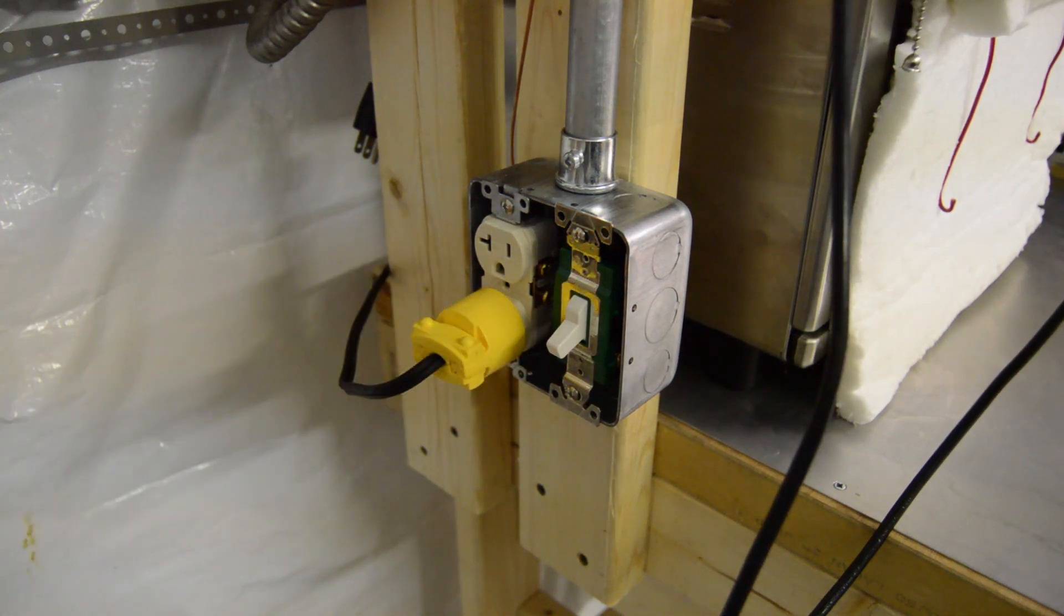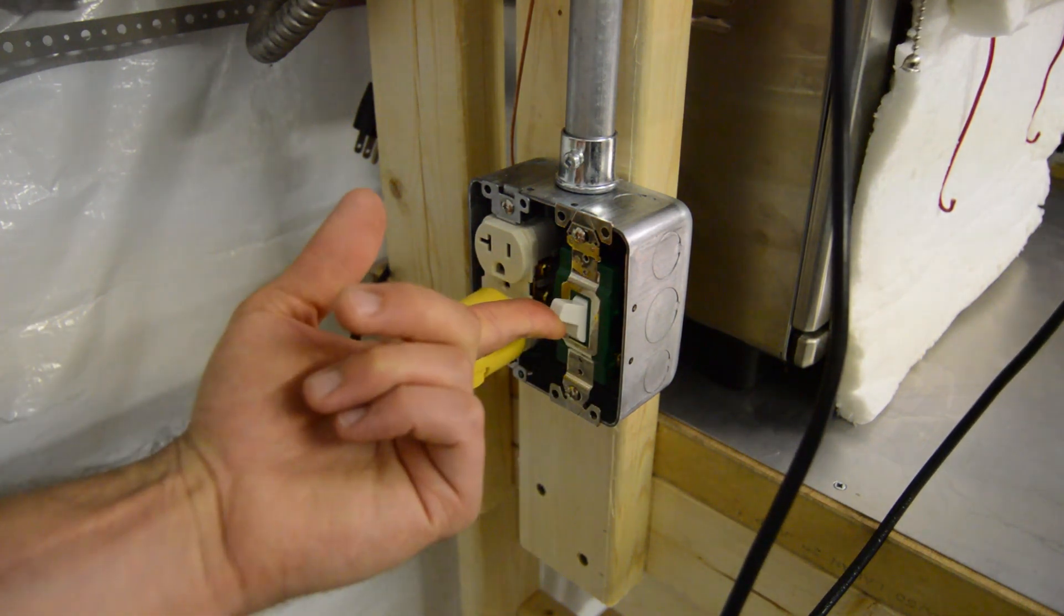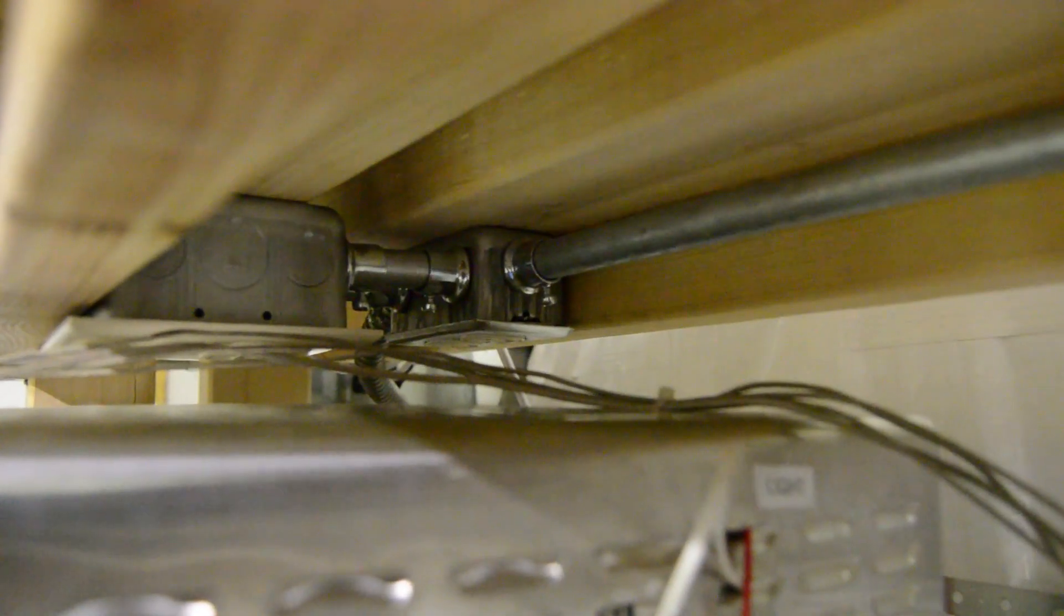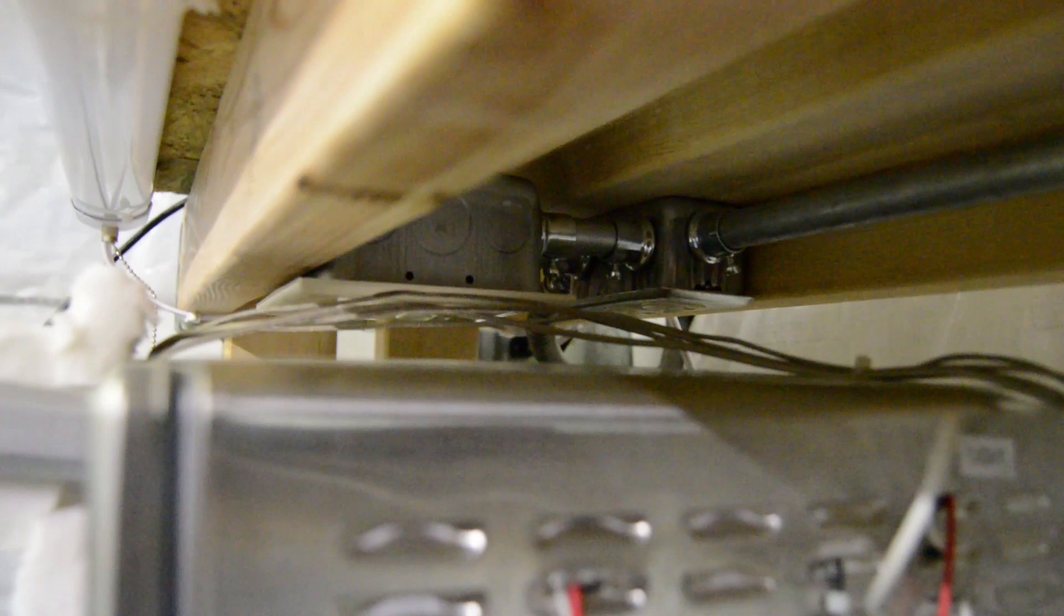There's a reflow oven, it's plugged in, has a switch to turn it on and off. Although I did not account for the clearance I would need to actually use the outlets that are above the reflow oven. We'll just skip using those for the time being, shouldn't be a big deal.